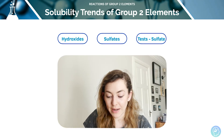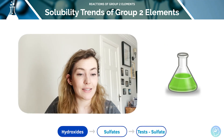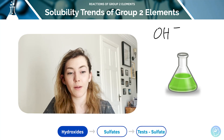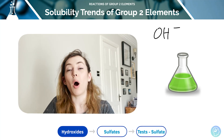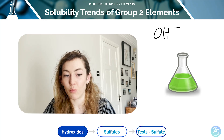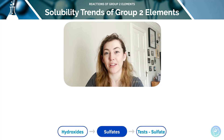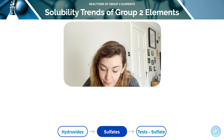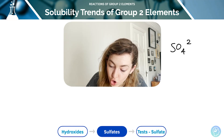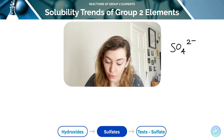Finally, we look at trends in solubility — for hydroxides, sulfates, and the test for sulfates. If a group 2 compound contains singly charged negative ions such as OH⁻, its solubility in water increases as you move down the group. For example, magnesium hydroxide is sparingly soluble, whereas barium hydroxide is very soluble. For compounds containing doubly charged negative ions such as SO4²⁻, the solubility decreases as we move down the group.